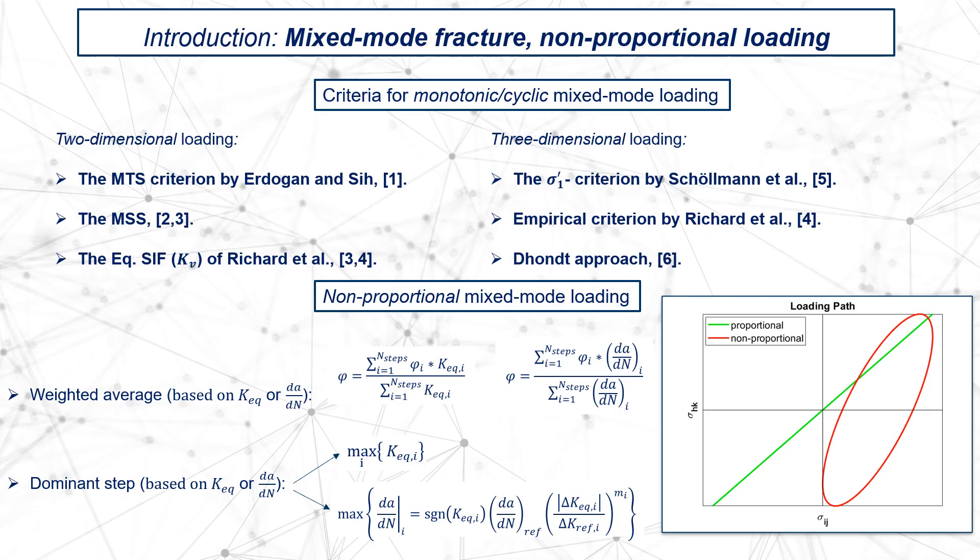In the case of non-proportional mixed mode loading, the fracture criteria developed for monotonic and cyclic proportional loading are no longer applicable. This circumstance essentially results from the fact that the time-varying stress path can no longer be described by only one parameter. By observing the curve described by the tension vector on a fixed plane, it is no more a straight segment but, in the case of a general periodic load, it is a closed curve.